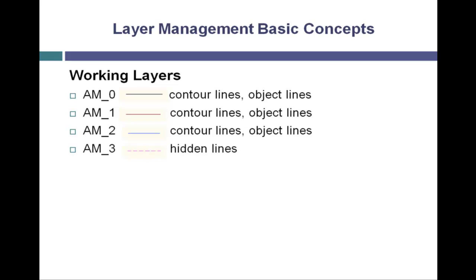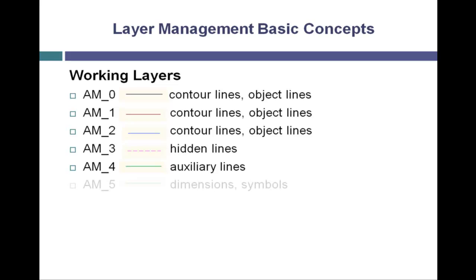AM underscore three is used for hidden lines. It uses a magenta color and a hidden line type. AM underscore four uses a continuous line type and is green, and is used for auxiliary lines such as borders for a partial hatch or the outline for the contour outer command. AM underscore five is used for dimensions and mechanical symbols. It also has a color of green and a continuous line type.